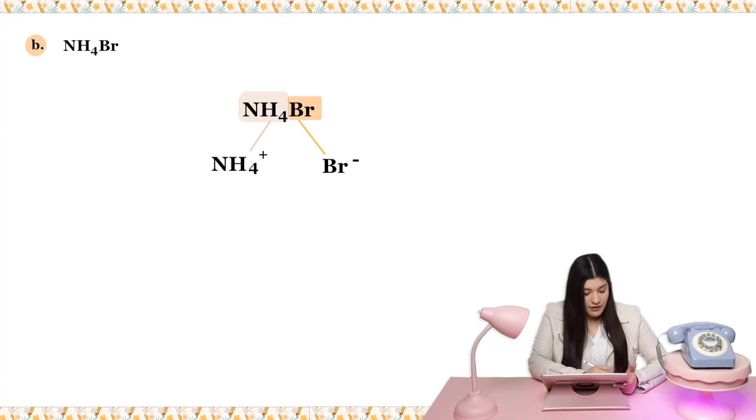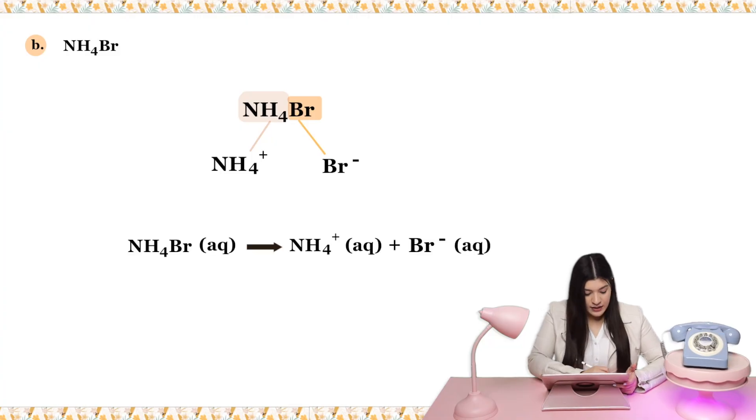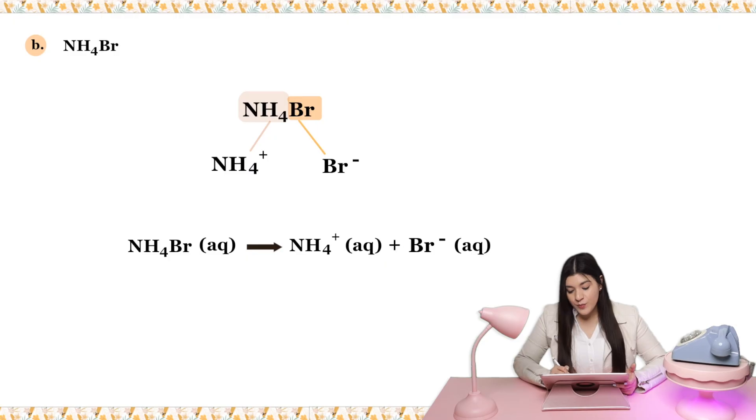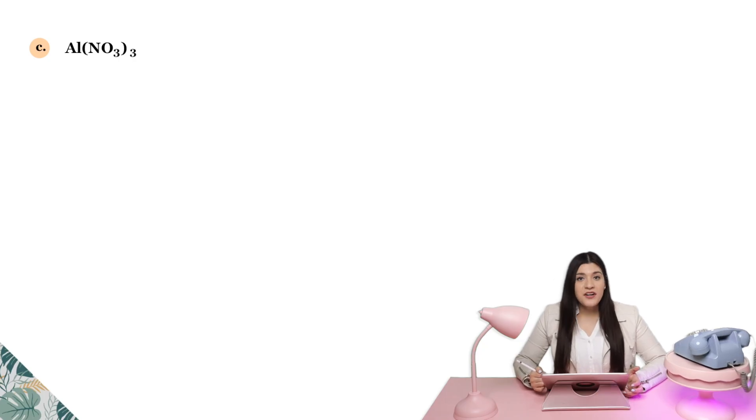So all I have to do is write this out in our dissociation equation. I have NH4Br, so this is what I started off with. I'm literally breaking this in 2, and I'm putting our NH4 with a positive charge, and I'm adding that to bromine with a negative charge. And this is my dissociation equation. We'll keep going. And you're going to see a pattern here. I'm just breaking everything apart into its separate ions and identifying how much of each I have.